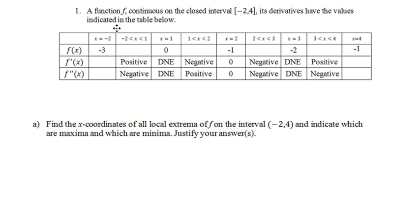This one's from the table, so let's just go ahead and look over this problem. The function f is continuous on the closed interval from negative 2 to 4, its derivatives have the values indicated in the table below. Find the x-coordinates of all the local extrema of f on the interval from negative 2 to 4, indicate which are maxima which are minima, and justify your answer.